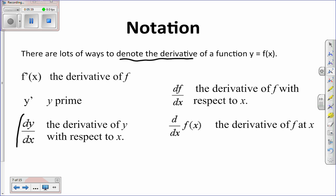This is interpreted as the derivative of y with respect to the derivative of x. Here we've got the derivative of f with respect to x. And then here is the derivative of the f function at x. All of these things are telling you to find the slope of the tangent line for your function at x.